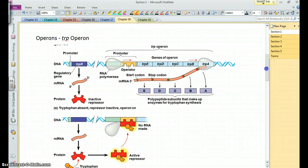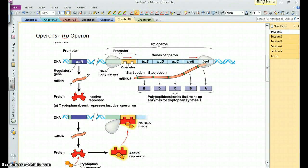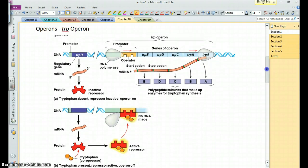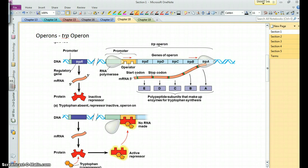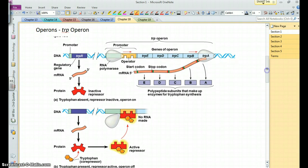The trp operon is what's known as a repressible operon, and that is the presence of something, in this case tryptophan, represses the operon. The operon is in the on position normally, that is, there's this upstream gene that is responsible for coding for a protein known as a repressor, and you can see that repressor is produced in an inactive state. Thus, the operon will run.